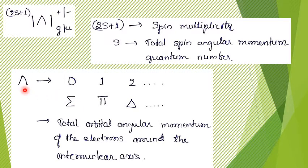Now for Lambda — the total orbital angular momentum of electrons around the internuclear axis — the value can be 0, 1, 2, and so on. When Lambda equals 0 the Greek letter is capital Sigma; when Lambda equals 1 it is Pi; when Lambda equals 2 it is Delta, and so on.